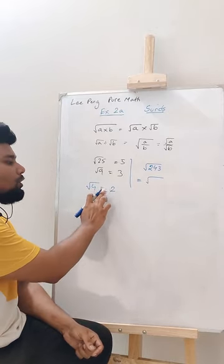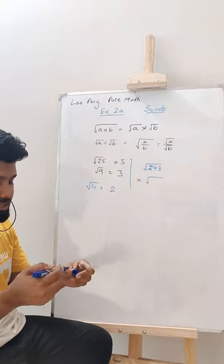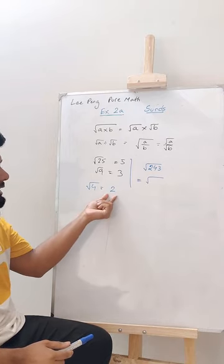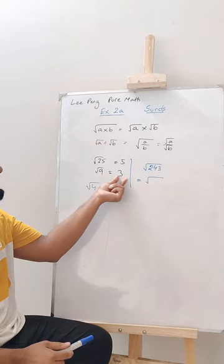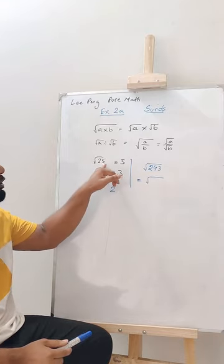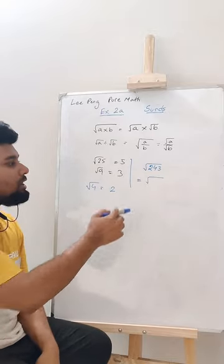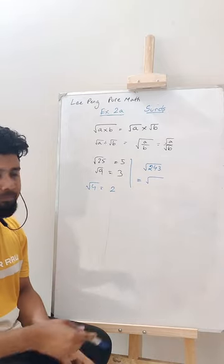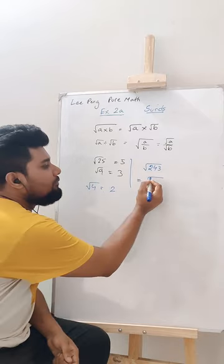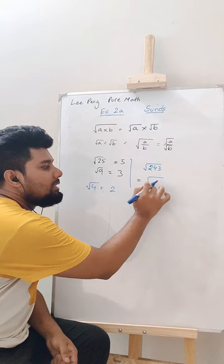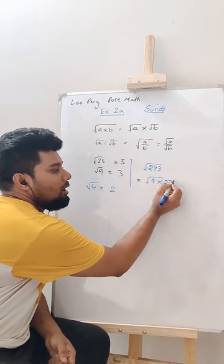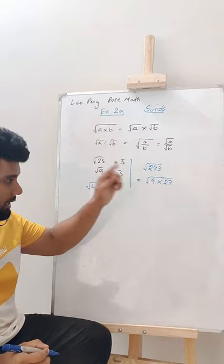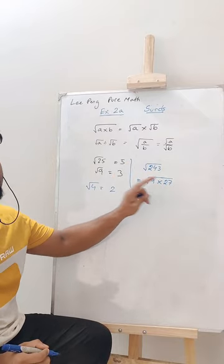This is the first root that I am getting a whole number. Then root over 9 is 3, root over 16 is 4, root over 25 is 5. Now, I have to figure out if root over 243 can be written as a multiple of these. If you work in your calculator, it doesn't go by 4, but it goes by 9. Root over 243, we can write as the product of 9 and 27. I mean, 243 we can write as a product of 9 and 27.